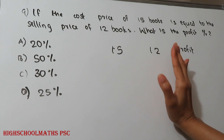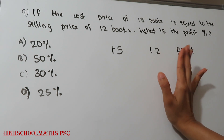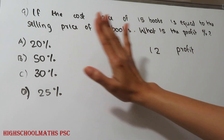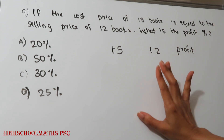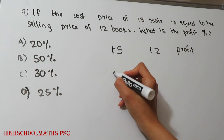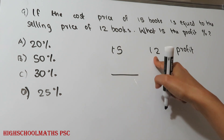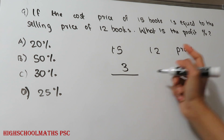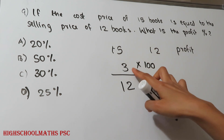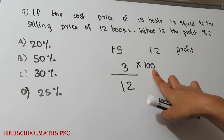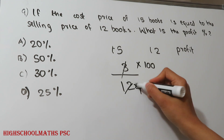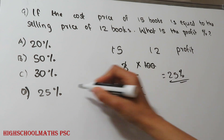If the cost price of 15 books is equal to the selling price of 12 books, what is the profit percentage? We have: cost price of 15 equals selling price of 12. Profit is the difference: 15 minus 12 equals 3 books' worth. Profit percentage equals 3 divided by 12 into 100, which equals 25%. The answer is Option 2.